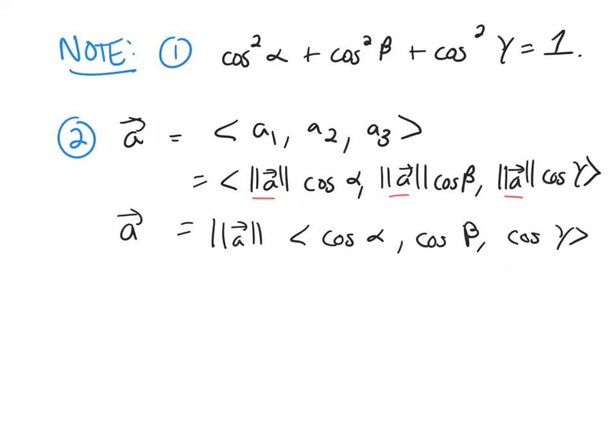So we can then take this, if I divide by the magnitude of A, I'm going to get A over the magnitude of A equals cosine alpha, cosine beta, cosine gamma.